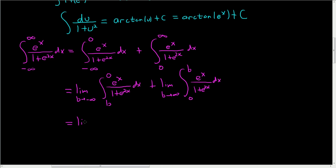This is the limit as b approaches negative infinity. Now we can integrate this. We've already actually done it. It's arctan e to the x plus c. Except this is a definite integral so we don't have to write the plus c. This is arctan e to the x and we're going from b to 0 plus the limit as b approaches infinity. A lot of notation here. Arctan e to the x, and here we're going from 0 to b.